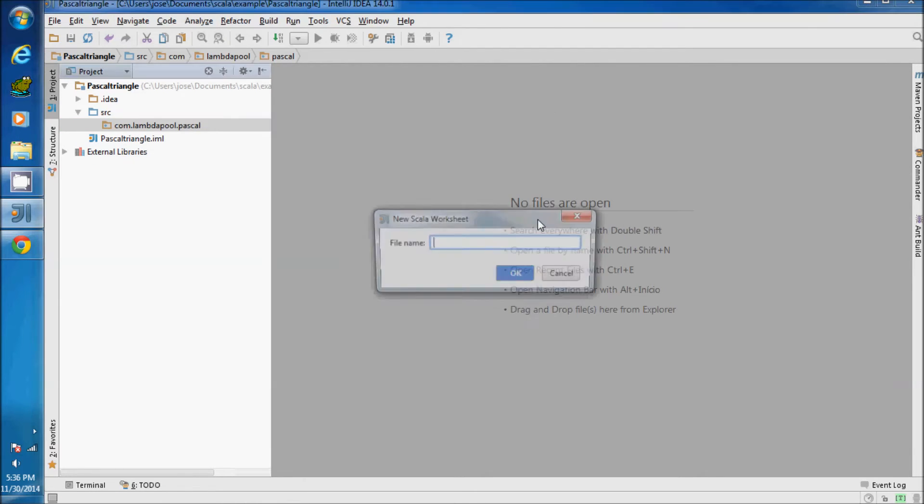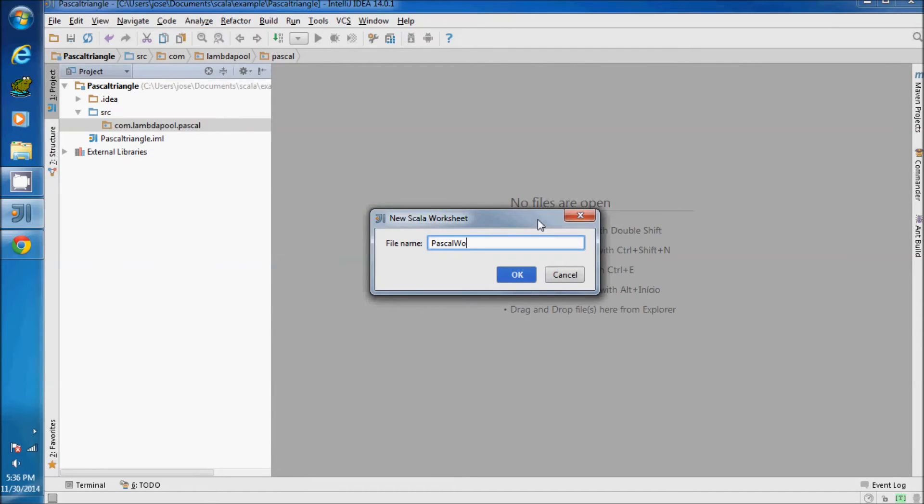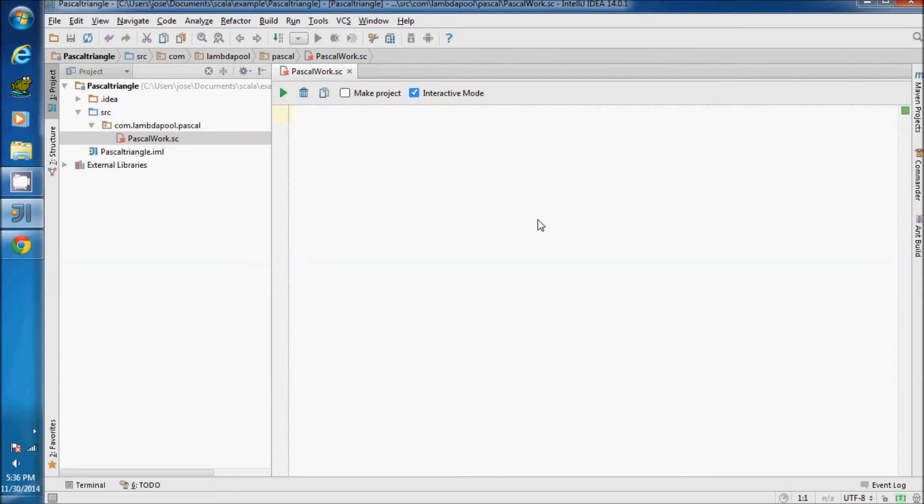Let's create a new project named Pascal Triangle, create a new package com.lambdapool.pascal, and create a new worksheet. We start from row zero in the Pascal triangle, the zeroth binomial, instead of one. That's why the edges are always zero. The factorial of zero is one. We define the factorial function f of a, previously seen in our videos.